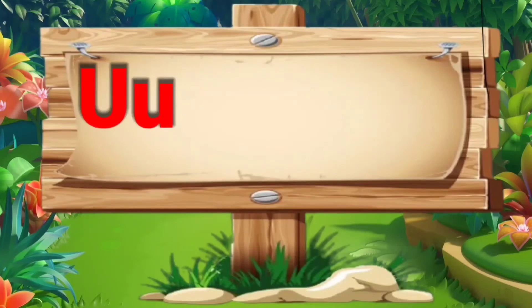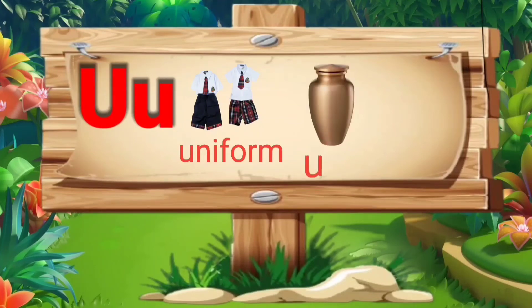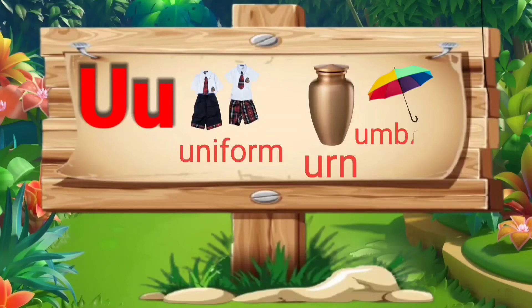U. U for uniform: U, N, I, F, O, R, M — uniform. U for urn: U, R, N — urn. U for umbrella: U, M, B, R, E, L, L, A — umbrella.